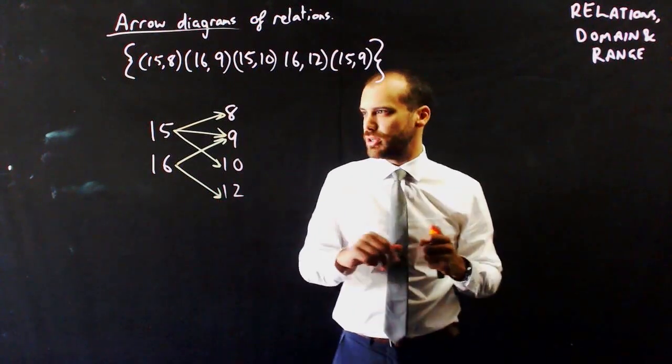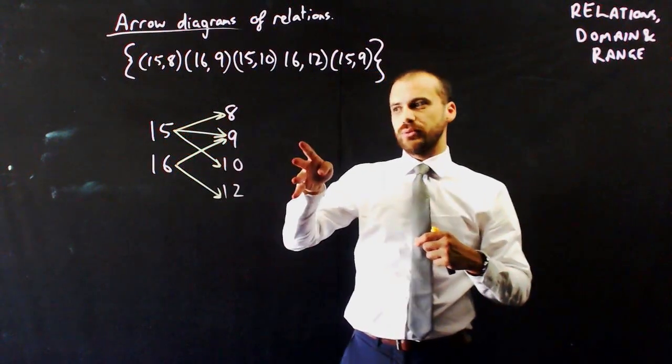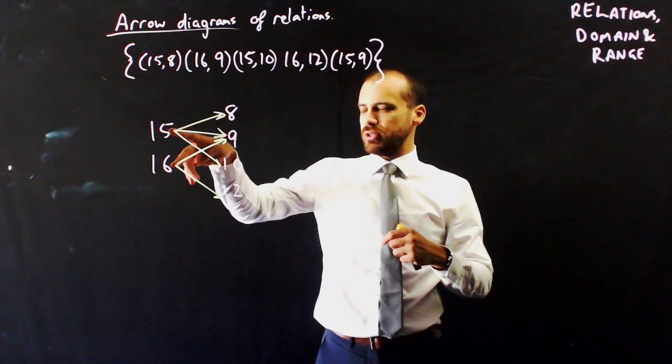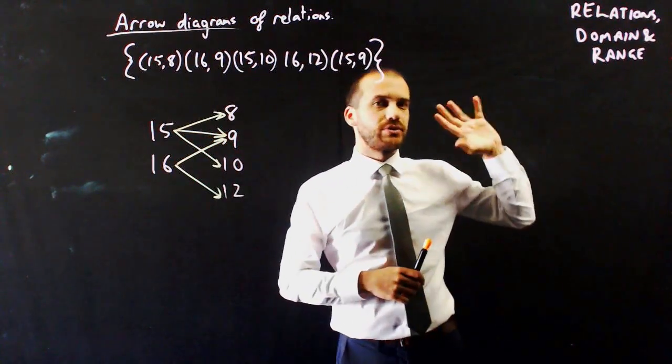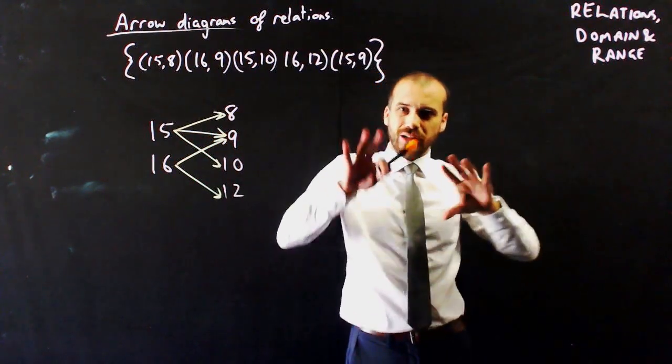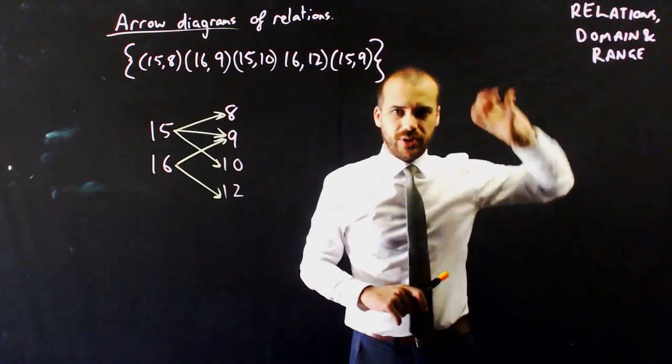There is something we need to talk about, we'll talk about in a future video. I'll just have you note that 15 seems to go to a few different ones, but also a few different ones both go to the number 9. That's for a future video. All right, that's relations, domain and range, a lot of different ideas here, but all culminate around that idea. Thank you.